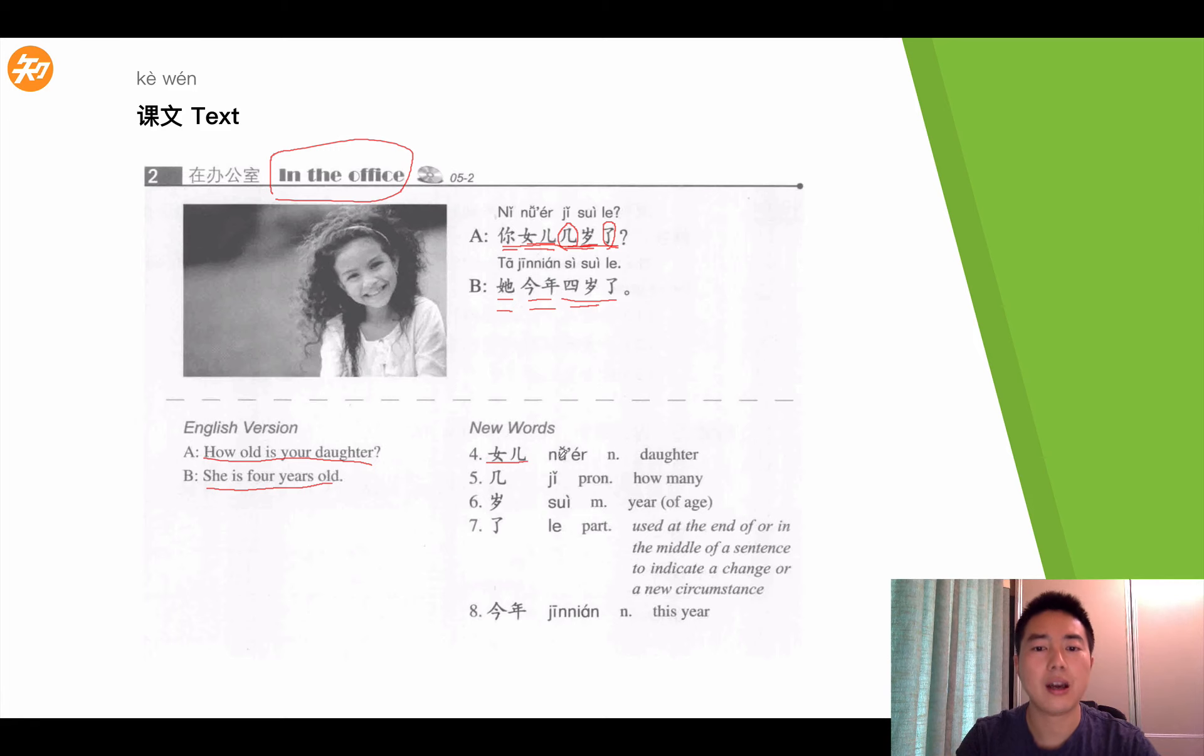First one, 女儿, 女儿 means daughter. 几, here it's used to raise a question, it means how many. 岁, it means the year of an age, so it's a measure word. 了 is a particle, it's used at the end or in the middle of a sentence to indicate a change or a new circumstance. Don't worry, this looks like a little bit complicated, but we're going to learn in our language points. 今年 means this year.